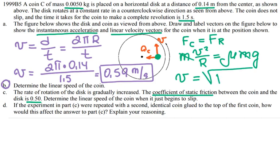So that is equal to the square root of R times μ times g. If I plug in my numbers, I get that equals 0.83 meters per second.